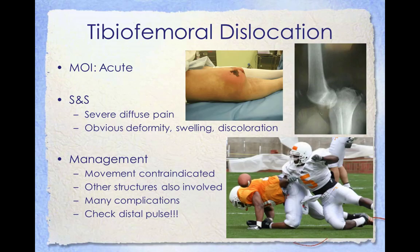Knee dislocations are commonly accompanied by arterial and nerve injuries. Most anterior dislocations result from hyperextension, while most posterior dislocations result from a posteriorly directed force to the proximal tibia while the knee is slightly flexed. Most knee dislocations result from severe trauma such as high-speed motor vehicle crashes, though seemingly minor trauma like stepping in a hole and twisting the knee can also cause dislocation. A dislocation will frequently injure surrounding structures, causing joint instability, which is a common long-term complication. Structures commonly injured include the popliteal artery, particularly in anterior dislocations, and the peroneal and tibial nerves. Undiagnosed arterial injury carries a high risk of ischemia complications that may lead to amputation.